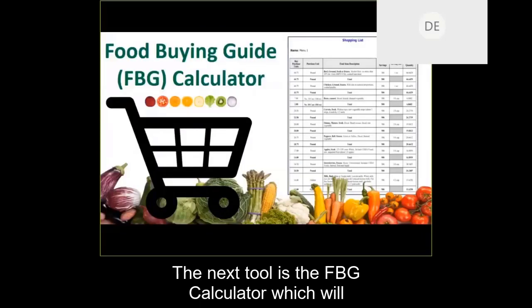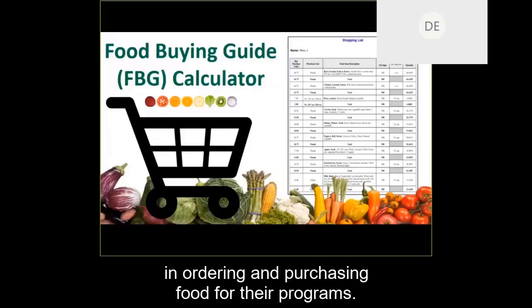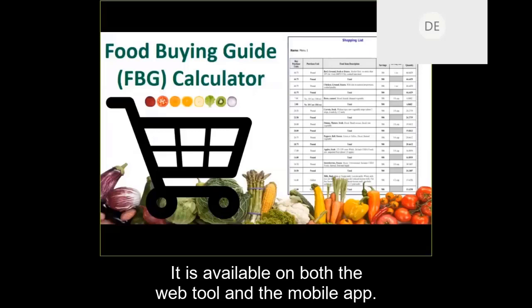The next tool is the FBG calculator, which will create a shopping list to assist program operators in ordering and purchasing food for their programs. It is available on both the web tool and mobile app.